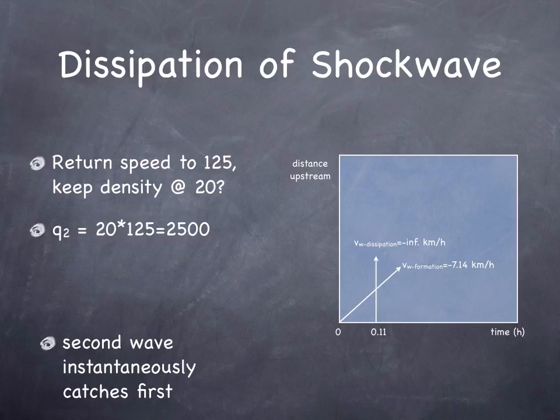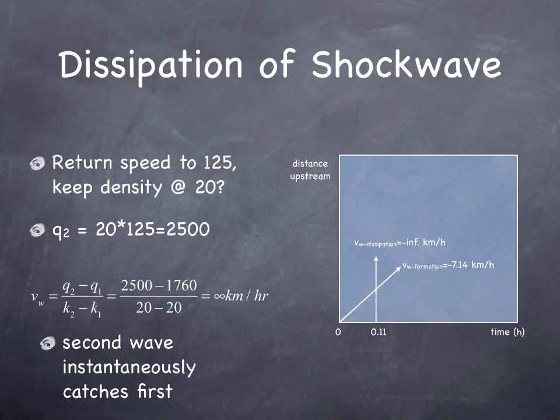Another possibility is that the speed returns to 125 kilometers per hour, but the density stays the same, so everyone just speeds up if they don't spread out. In that case, the shock wave dissipates very quickly, instantaneously, because everyone is just going faster. They're not spreading out at all.